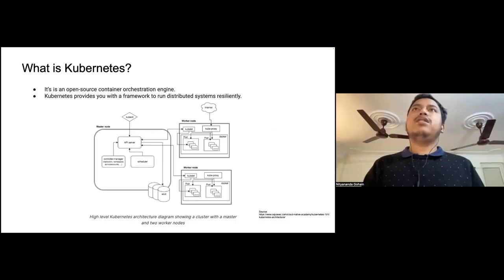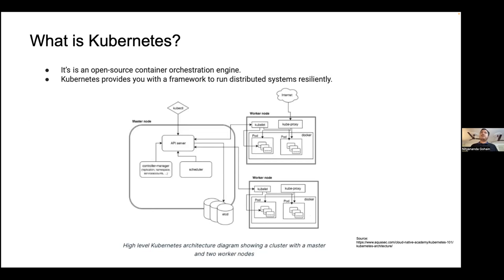Kubernetes is a container orchestration engine. Let's say you have applications you are containerizing and you want to deploy them — that's where Kubernetes comes in. It helps you deploy your containerized apps, manage them, and scale them, meaning increasing the number of pods running when a certain number of users increases.